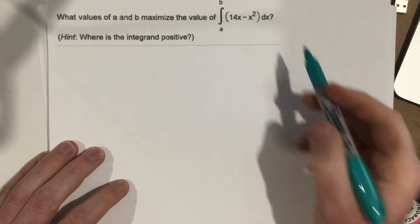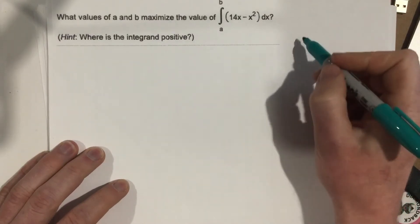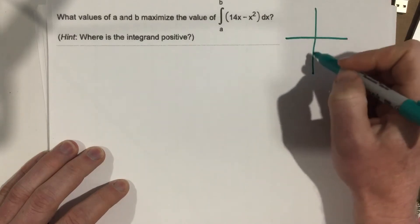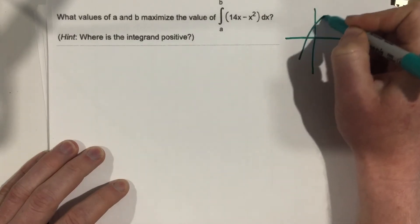If we graph this as a quadratic, we're going to have some function. I'll draw that up here. Some function that looks like maybe so.